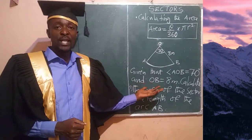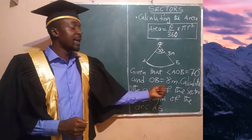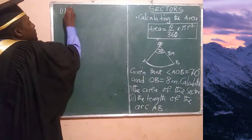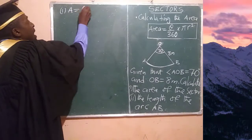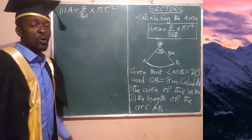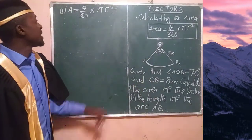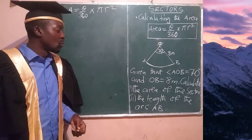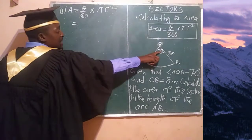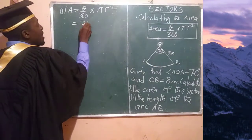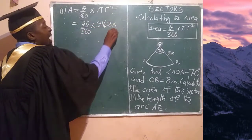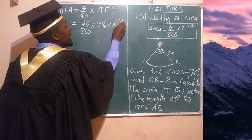We are now looking at question one, which asks us to calculate the area of the sector. The formula is: area of the sector equals theta over 360 times pi r squared. Substituting our values, remembering that pi is 3.142, we have 70 over 360 times 3.142 times 8 squared.